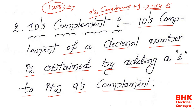This is the procedure we follow whenever we need to get the tens complement for any decimal number. Once again: tens complement of a decimal number is obtained by adding one to its nines complement. The second point is that tens complement is always applicable only for decimal numbers, not for binary numbers.